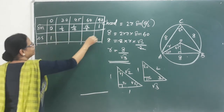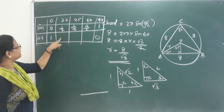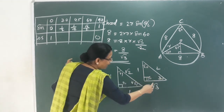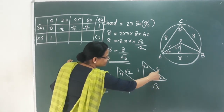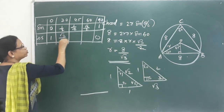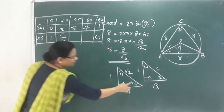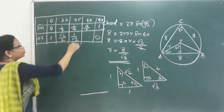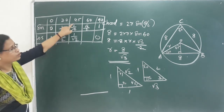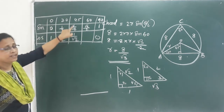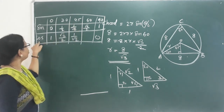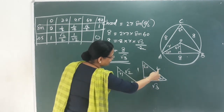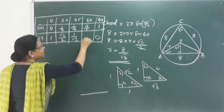For cosine: cos 30 equals root 3 by 2 — adjacent side by hypotenuse. Cos 45 equals 1 by root 2. Cos 45 equals sin 45 — the same value, because the two angles are equal. Cos 60 equals adjacent side by hypotenuse equals 1 by 2.